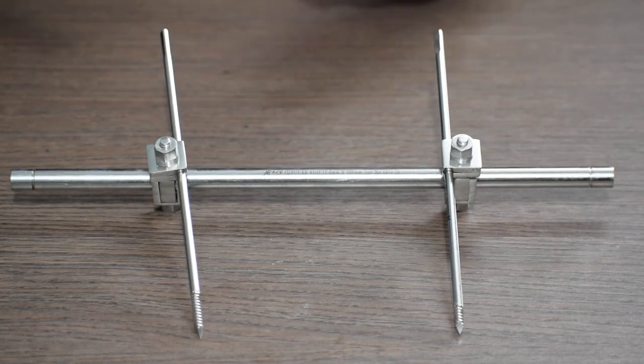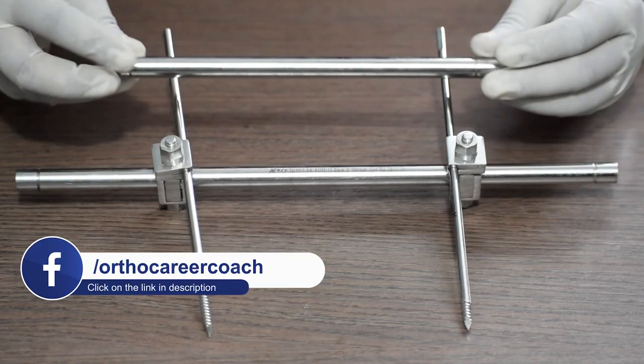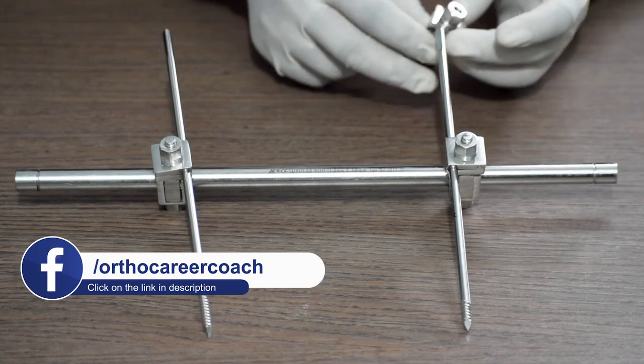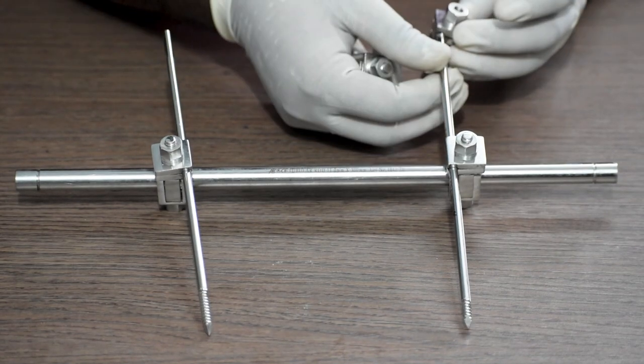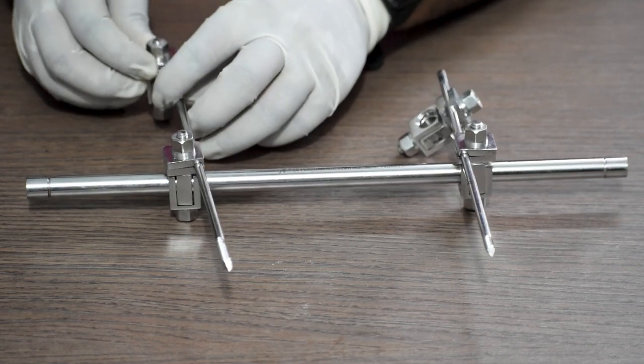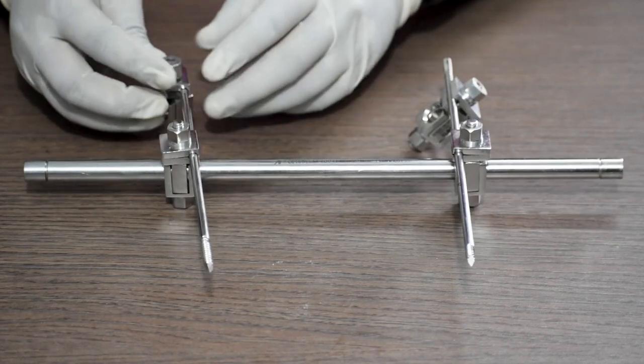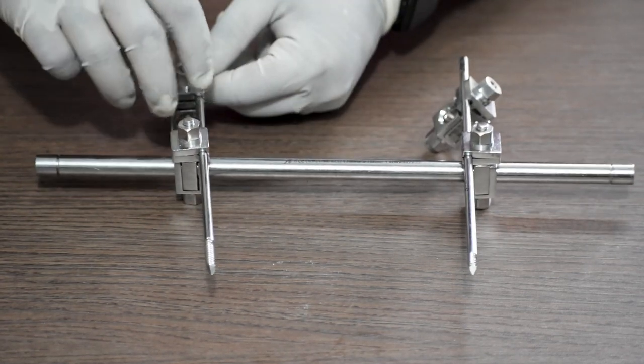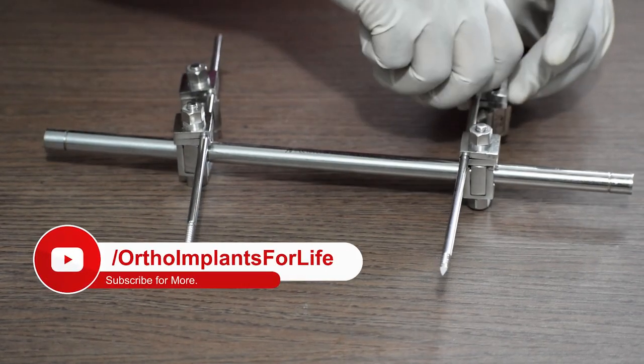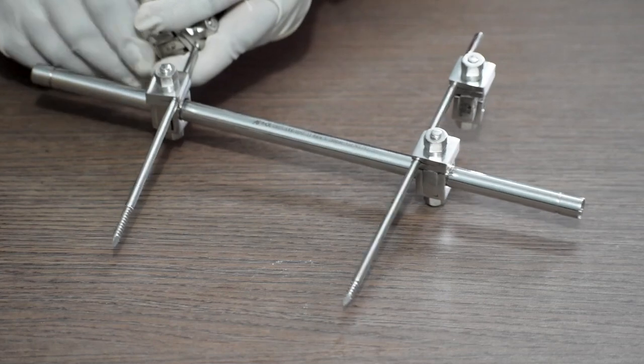In case we require to do a double rod fixation, we will attach two more single pin clamps and then we will insert the tubular rod through this single pin clamp.